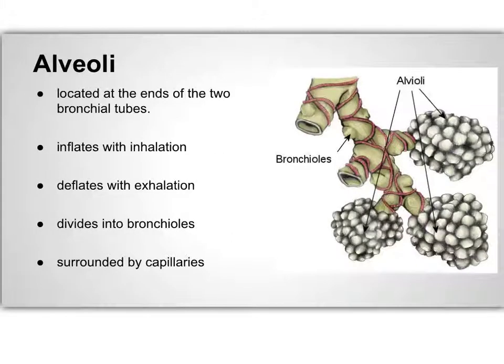Alveoli are located in alveolar ducts. About five to six alveolar sacs are attached to one alveolar duct. An average human lung has over 480 million alveoli. They are like tiny sacs or balloons and inflate with inhalation and deflate with exhalation. They are surrounded by very tiny blood vessels called capillaries. Inhaled air passes through the alveolar walls and capillary walls into your blood. In these hundreds of millions of sacs, gas exchange occurs.